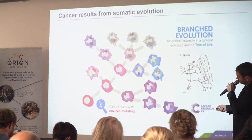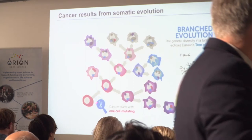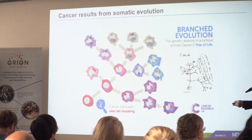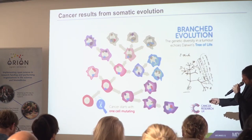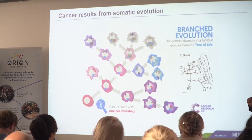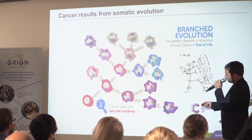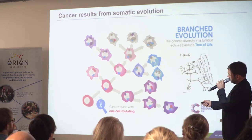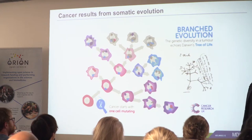Every time a somatic cell — say a cell in your liver — divides, there will sometimes be a mutation introduced just because of this error in cell division. Most of them get repaired; some might survive. When that cell divides again, the daughter cells will inherit that mutation from their parent, and may add a few new mutations of their own.